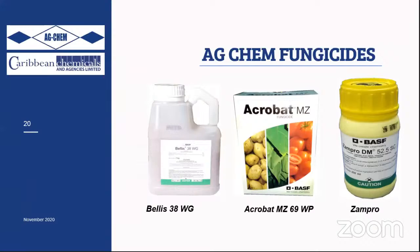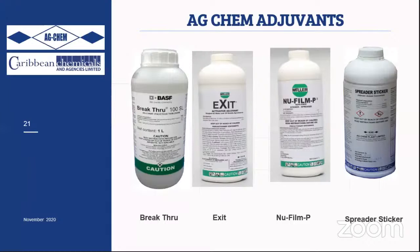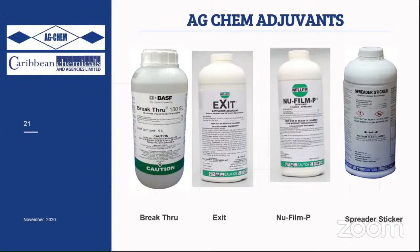Because onion has a waxy leaf, adjuvants are important. Breakthrough and Exit are ideal penetrant adjuvants for systemic fungicides and insecticides, allowing products to enter plant foliage. Newfenty and spreader-sticker products are effective for contact insecticides or fungicides, providing greater wetting and sticking, and helping products remain on the plant through rainfall for greater control.